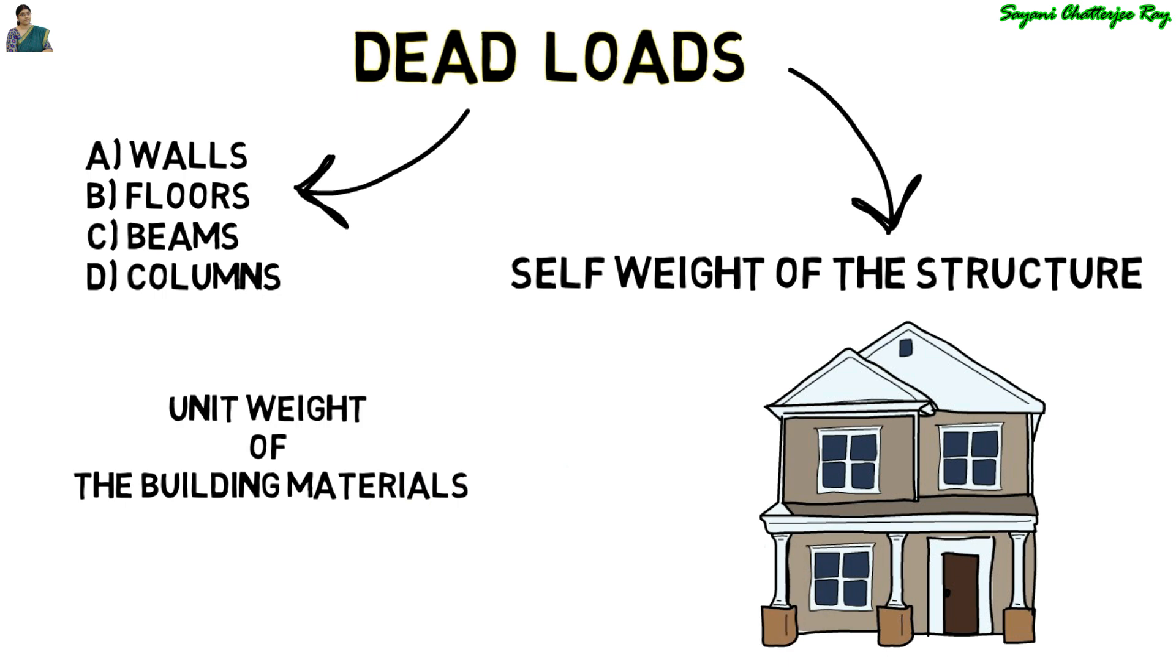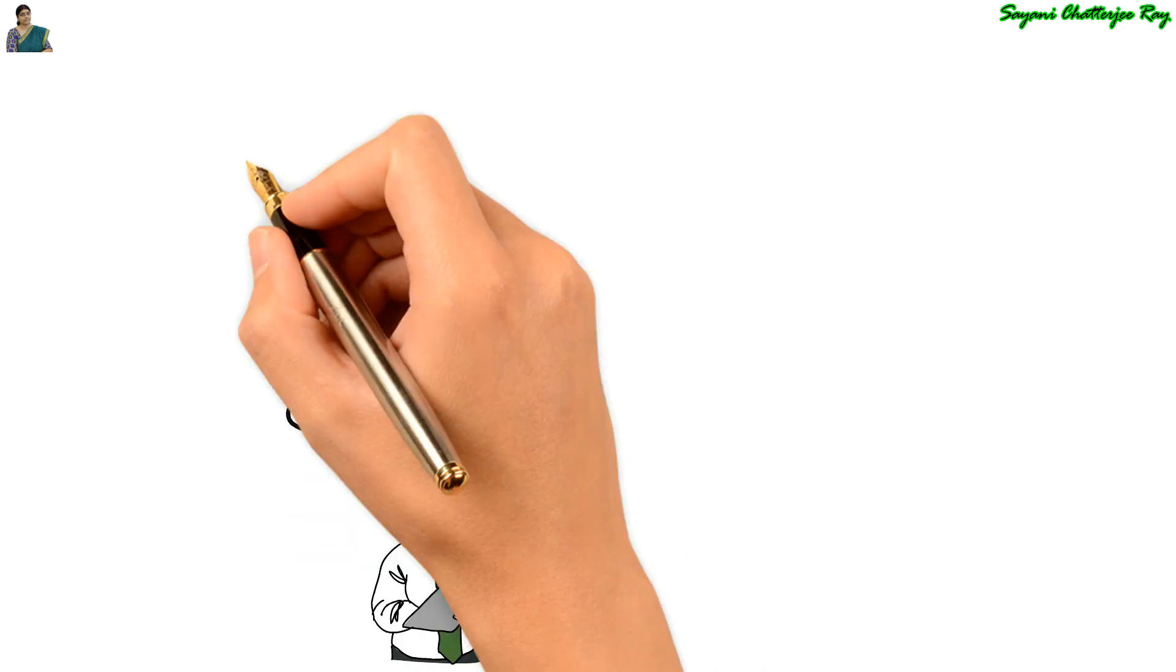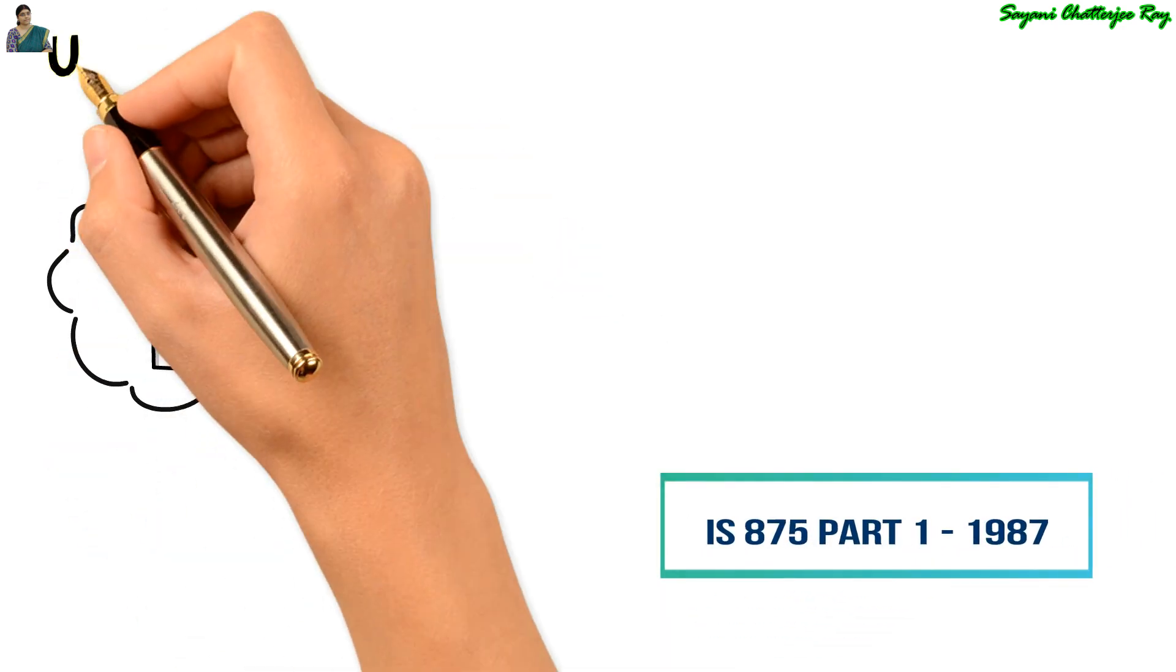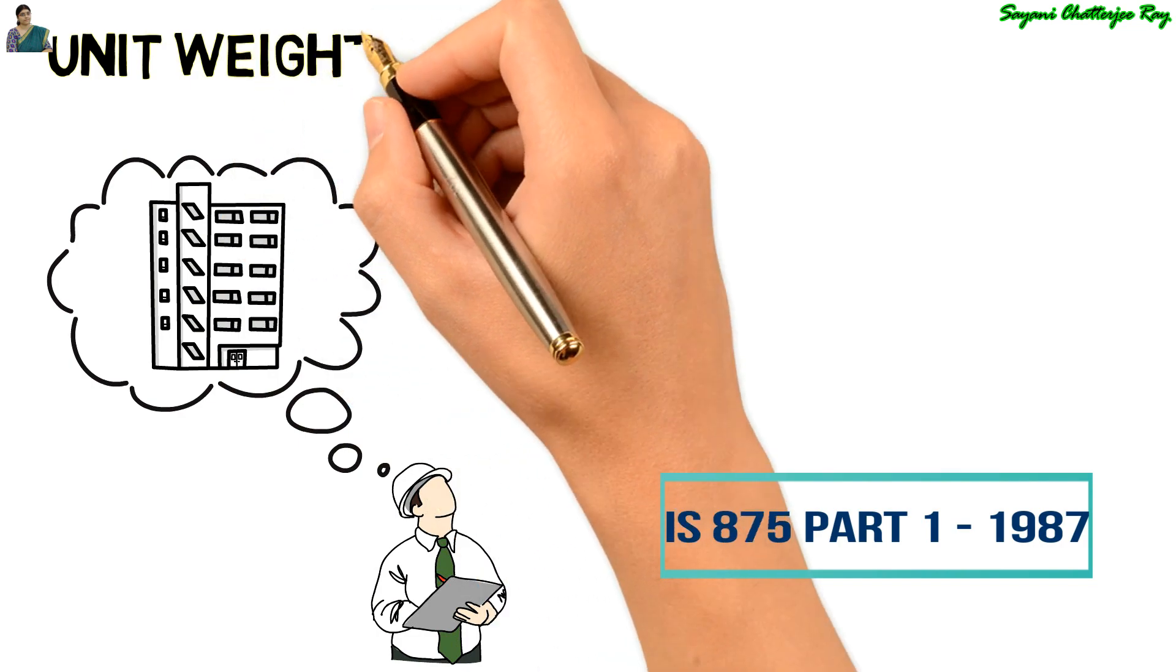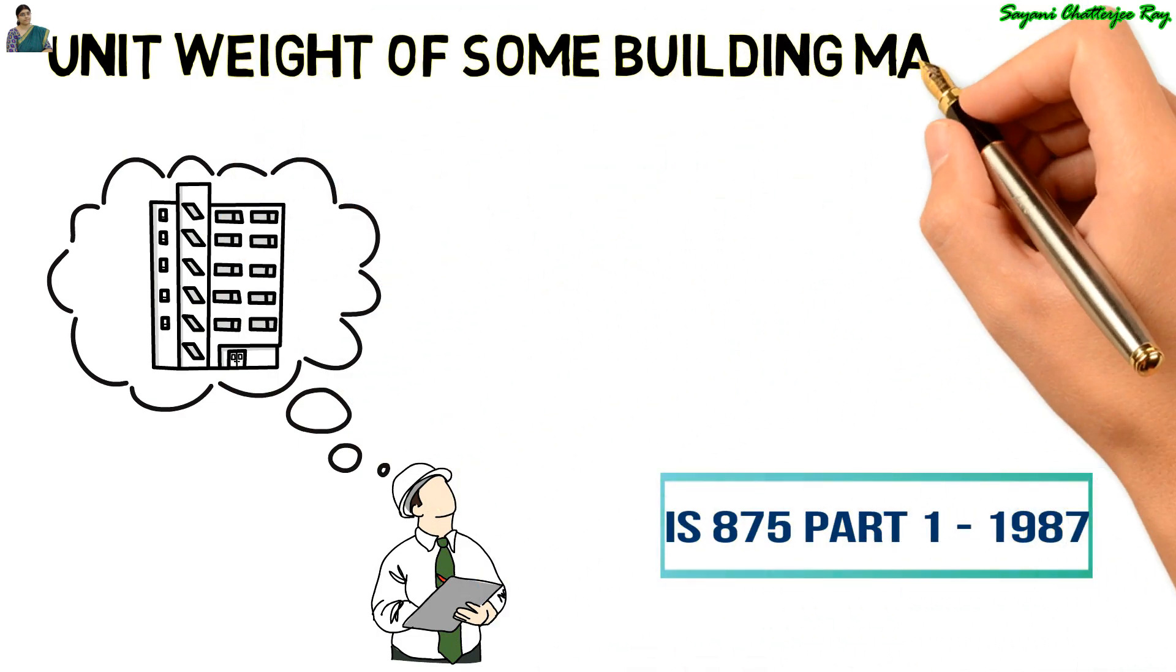The unit weights of commonly used building materials are given in IS code IS 875 part 1 1987. A civil engineer while designing any building or any structure should refer IS 875 part 1 1987 for the unit weights of commonly used building materials.